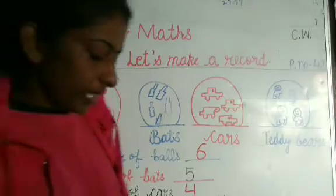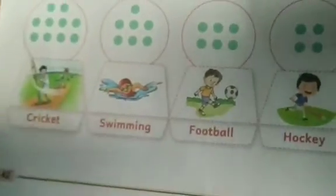Now let's do question number two in the practice book. The question says: count the dots for each sport and answer the questions. The sports shown are cricket, swimming, football, and hockey. You have to count the number of people who play cricket, then the number who play cricket and swim combined, then the number who play football, and those who play football and swim — add them together. One dot means one person.